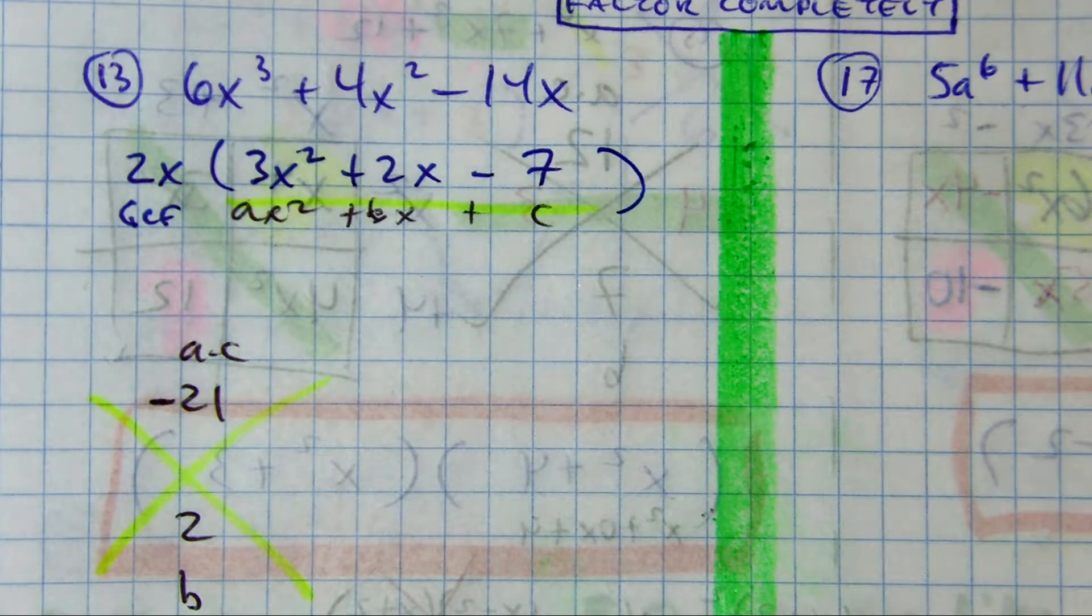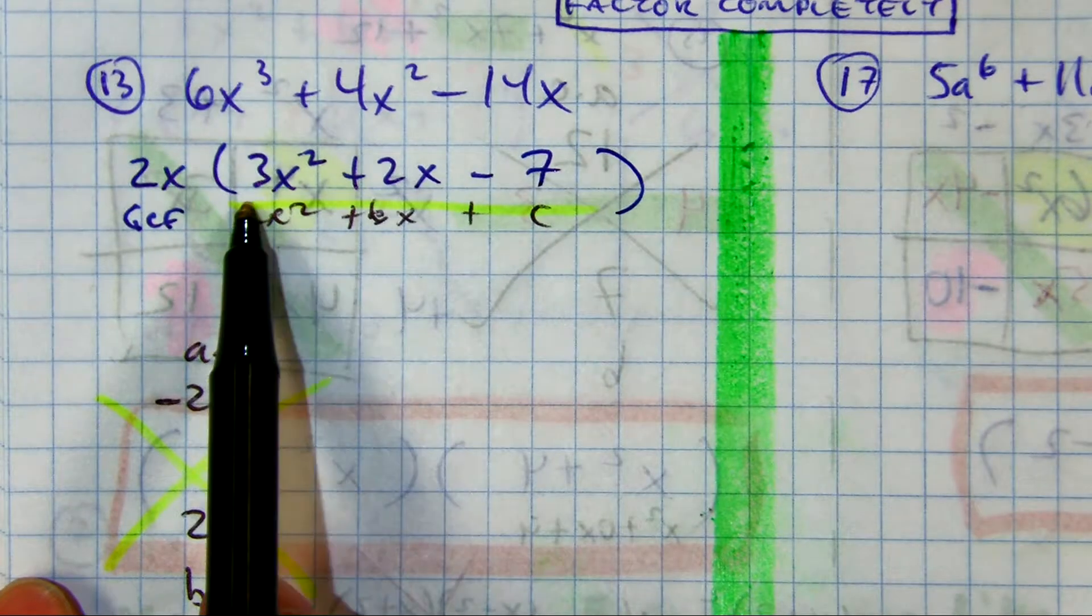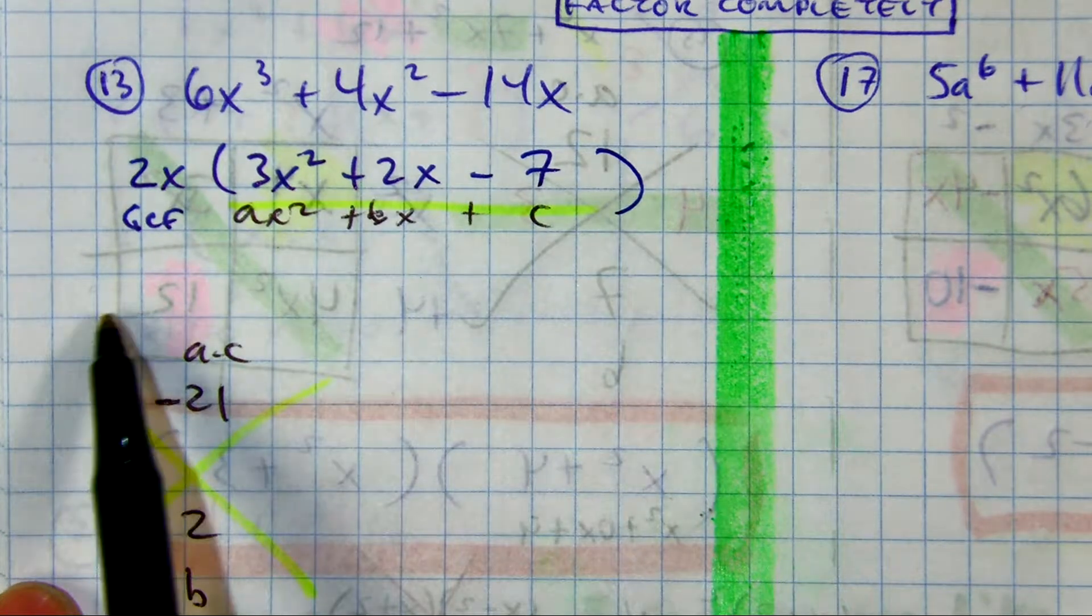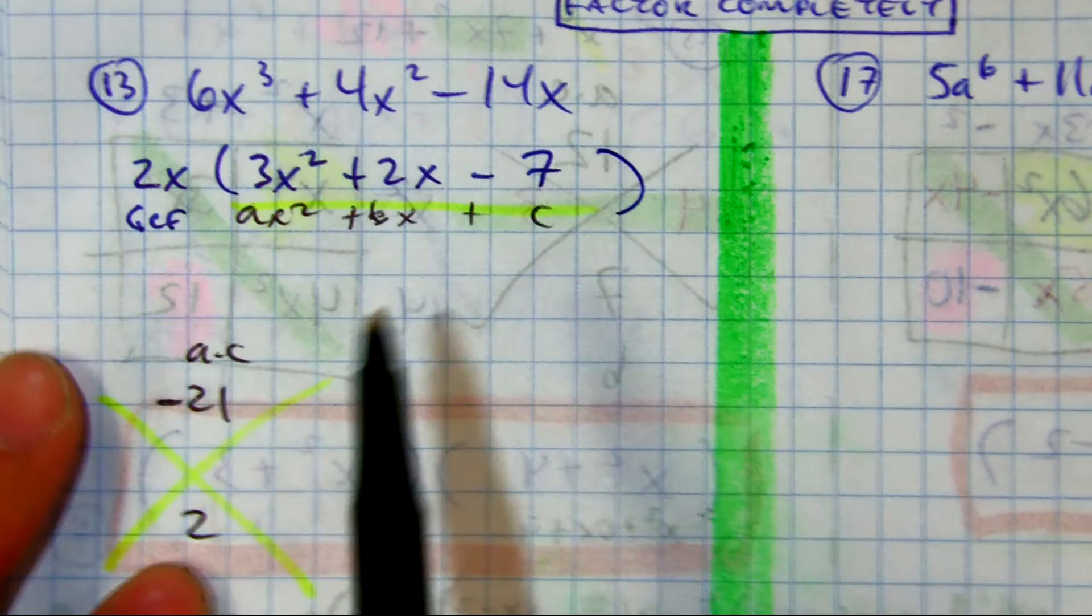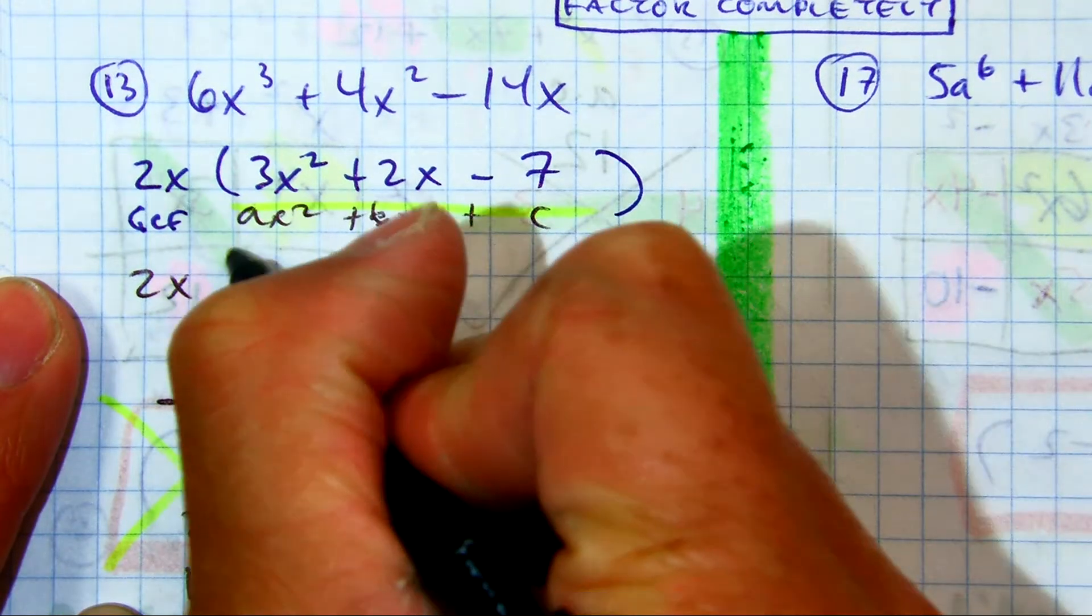None. Raise your hand if you got none. It just means that the yellow part is prime. What does that mean? It just means the only thing you can factor out is just 2X. And that's your answer.